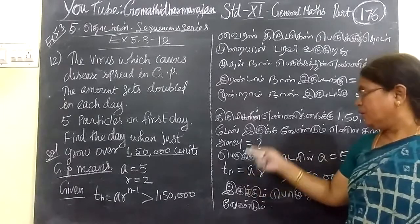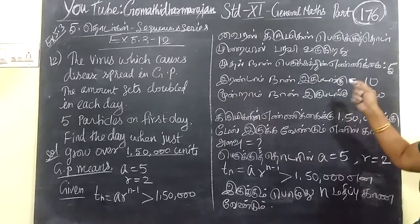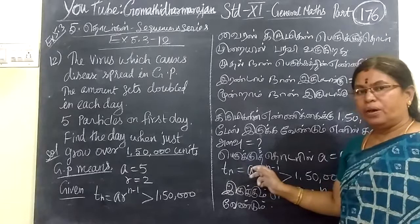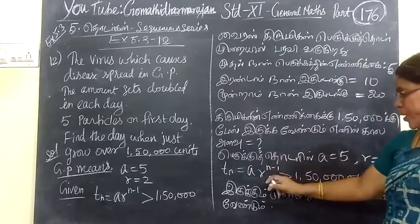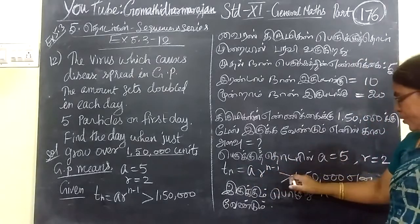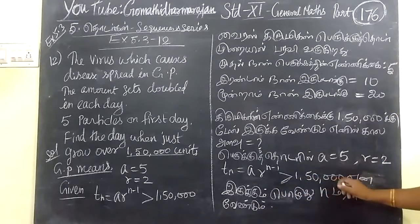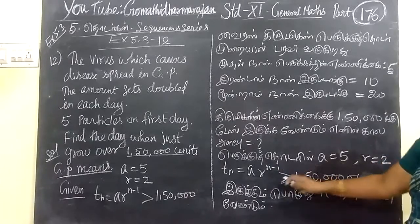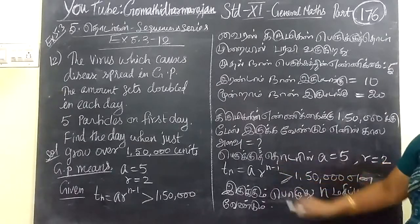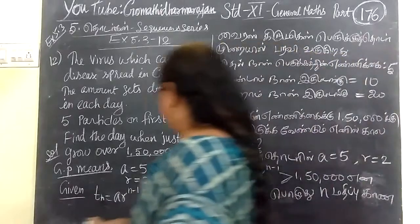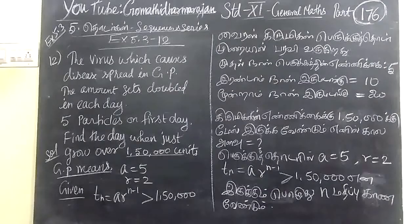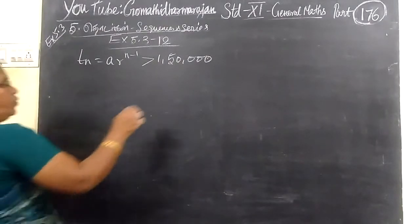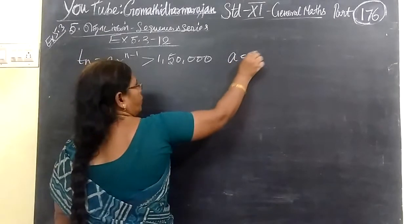The same thing is given here also. This is greater than 1,50,000. Now, we need to find on which day the value exceeds this amount.